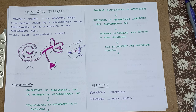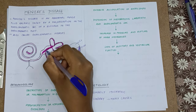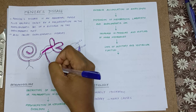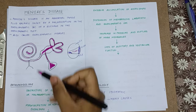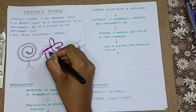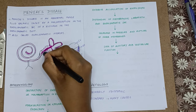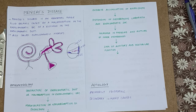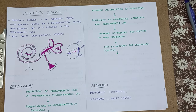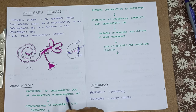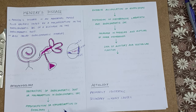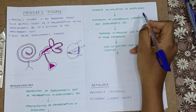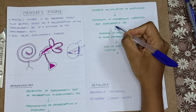So in Meniere's disease, when endolymph production or absorption is poor in the endolymphatic sac, this fluid bulges and causes increase in the saccule size and every compartment. Meniere's disease is caused by obstruction of the endolymphatic duct or malabsorption in the endolymphatic sac, which causes hypersecretion or hypoabsorption of endolymph, leading to excessive accumulation of endolymph and distension of the membranous labyrinth.